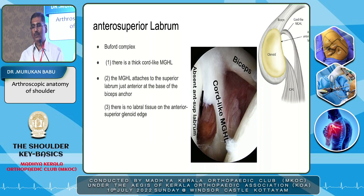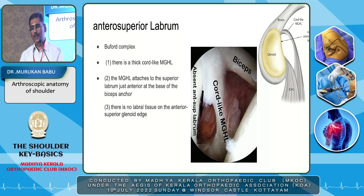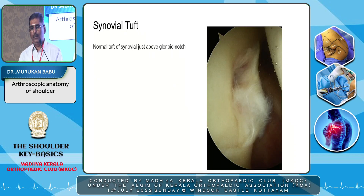The third variant is the Buford complex. The complex has three components: first, the MGHL is thick and cord-like; second, the MGHL is attached to the superior labrum just anterior to the base of the biceps anchor; and third, there is no labral tissue on the anterosuperior glenoid. These three things constitute the Buford complex. The synovial tuft — fraying of the synovium at the anterior glenoid notch — is also normal.